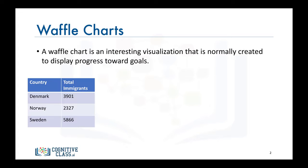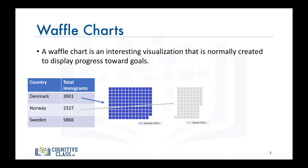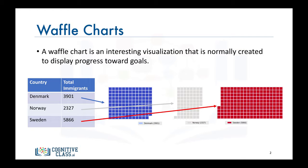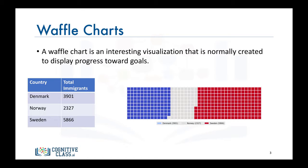say immigration from Scandinavia to Canada is comprised only of immigration from Denmark, Norway and Sweden, and we are interested in visualizing the contribution of each of these countries to the Scandinavian immigration to Canada. The main idea is that for a given waffle chart whose desired height and width are defined, the contribution of each country is transformed into a number of tiles that is proportional to the country's contribution to the total. So the more the contribution, the more the tiles, resulting in what resembles a waffle when combined, hence the name waffle chart.